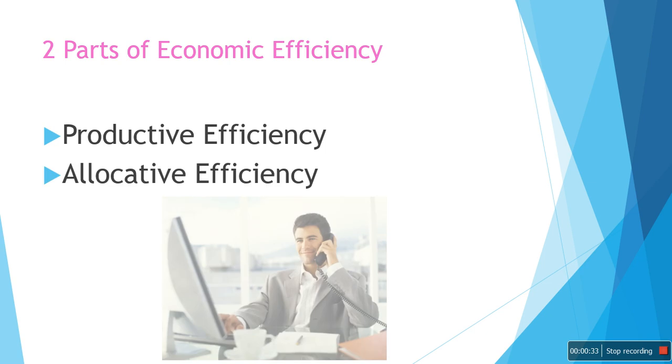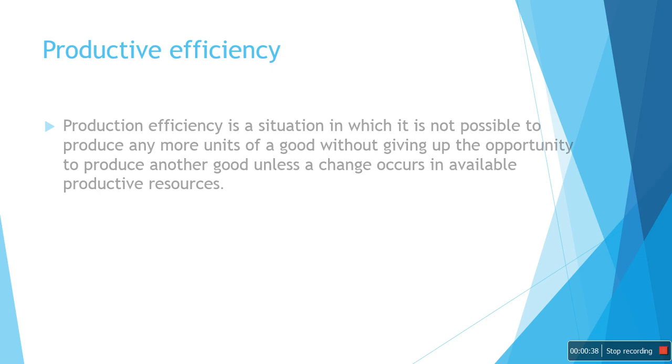Productive efficiency and allocative efficiency. Productive efficiency is a situation in which it is not possible to produce any more units of a good without giving up the opportunity to produce another good unless a change occurs in available productive resources.